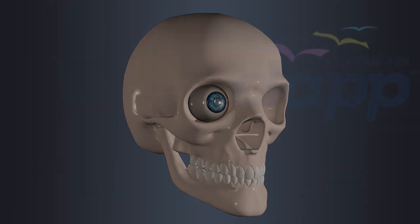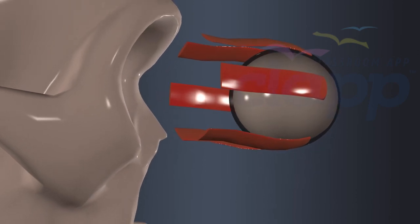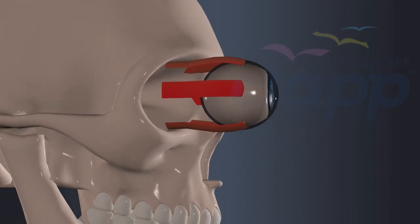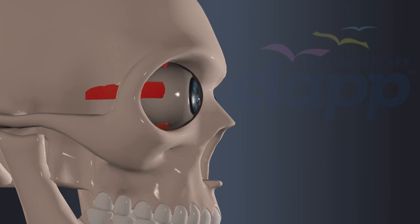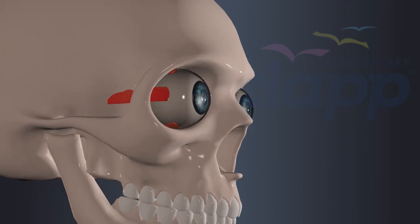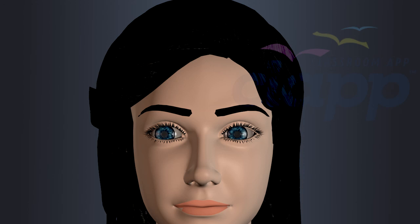The human eye is controlled by a network of six muscles known as the extraocular muscles. These muscles help to fix the eyeball in the socket and control the movement of the eye in different directions, helping to track objects, maintain focus, and protect the eye from potential harm.